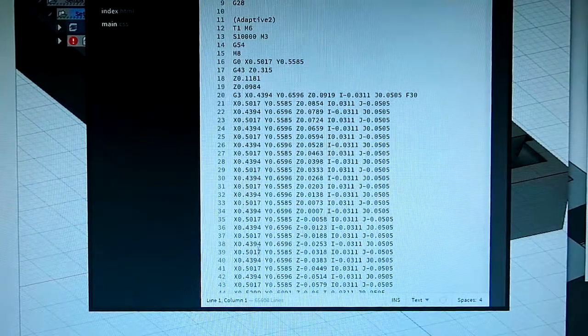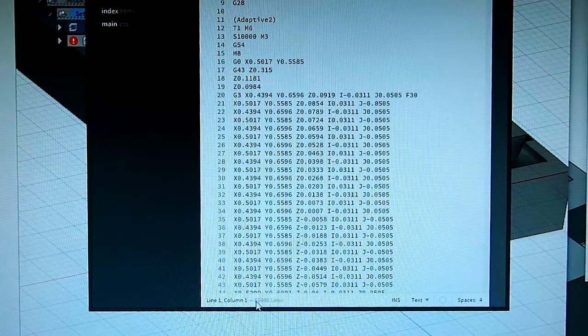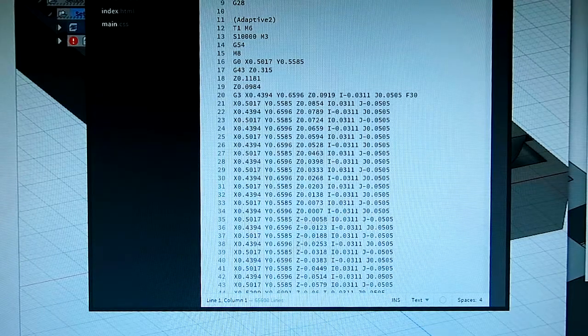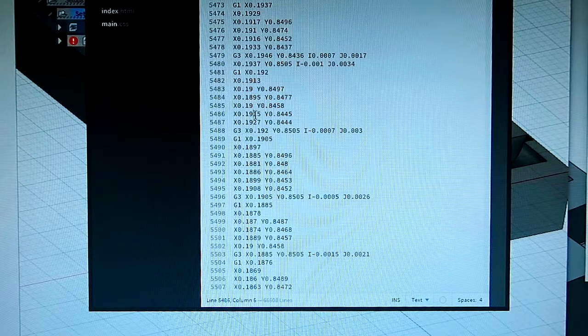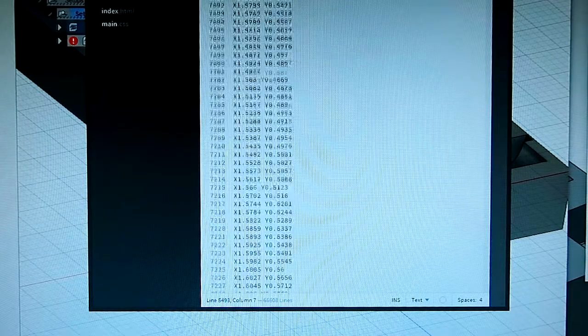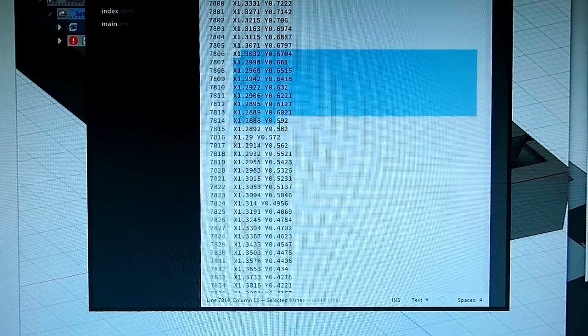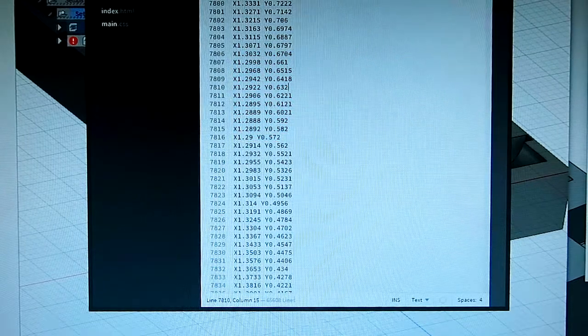So this is the file that it generated, and I can see right down here at the bottom, it's 65,000 lines long, and that's to cut one pocket. And so that's every one of those little movements and corkscrews, and every single line of this is a small movement that the machine's going to make.